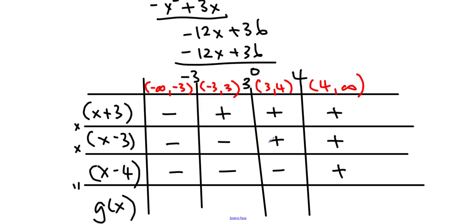I know that if I multiply these three things together, I'm going to get g(x). That tells us what the parity of g(x) is going to be as well. A negative times a negative times a negative is negative, so g(x) is negative here. A positive times a negative times a negative is positive, so g(x) is positive here. Positive times positive times negative is negative. Positive times positive times positive is positive.